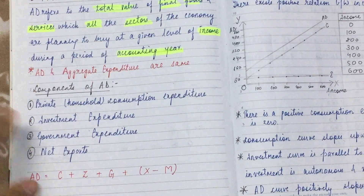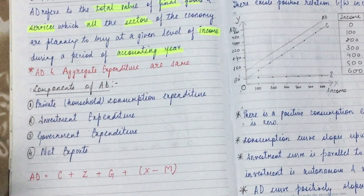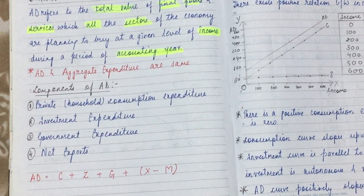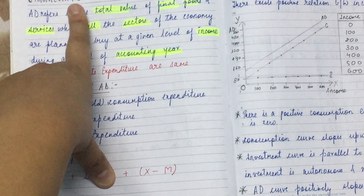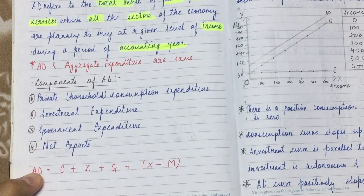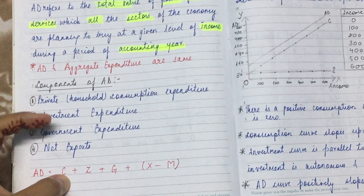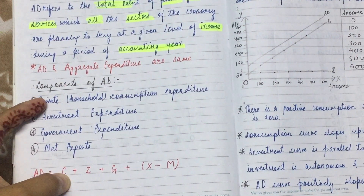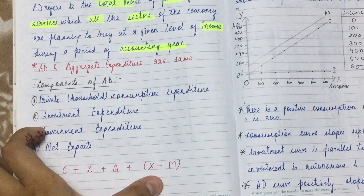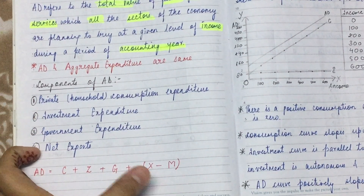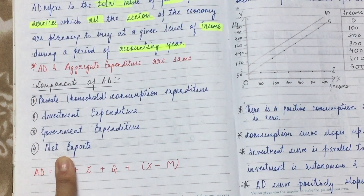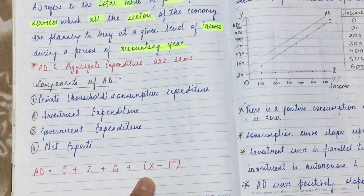So in all sectors — private households, businesses, government, and foreign sector — the combined demand is aggregate demand. The formula is: AD equals C plus I plus G plus net exports, where C means consumption, I means investment, G means government expenditure, and net exports means X minus M, i.e., exports minus imports.